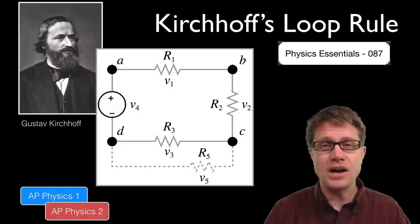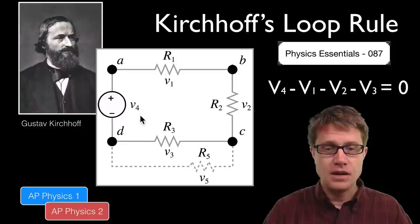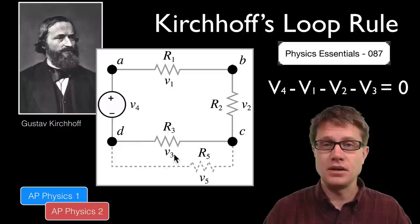The loop rule is written as: the sum of all the voltages in a loop is equal to zero. So if we were to write that out, V4 — that would be the voltage of the battery — minus V1, minus V2, minus V3 is equal to zero. The sum of all the voltages is equal to zero.